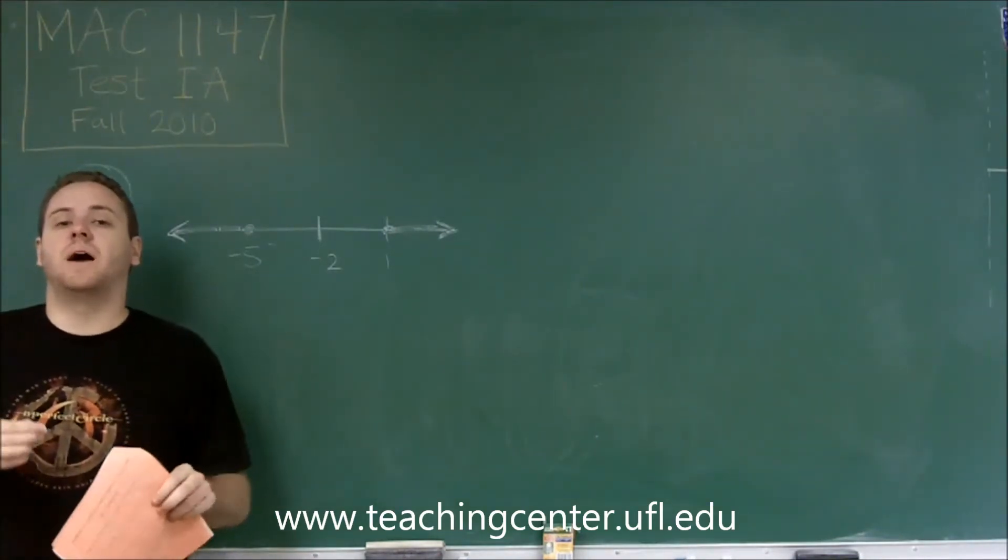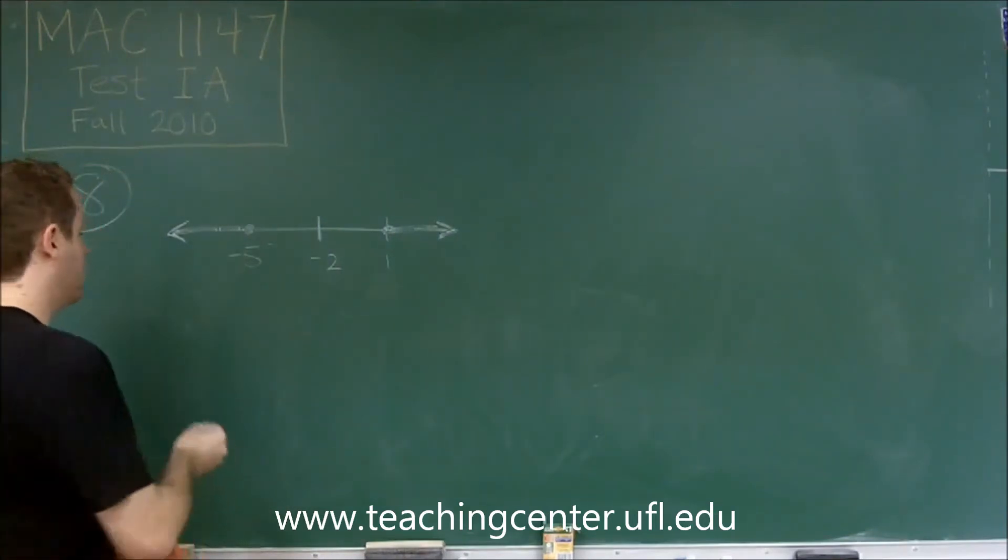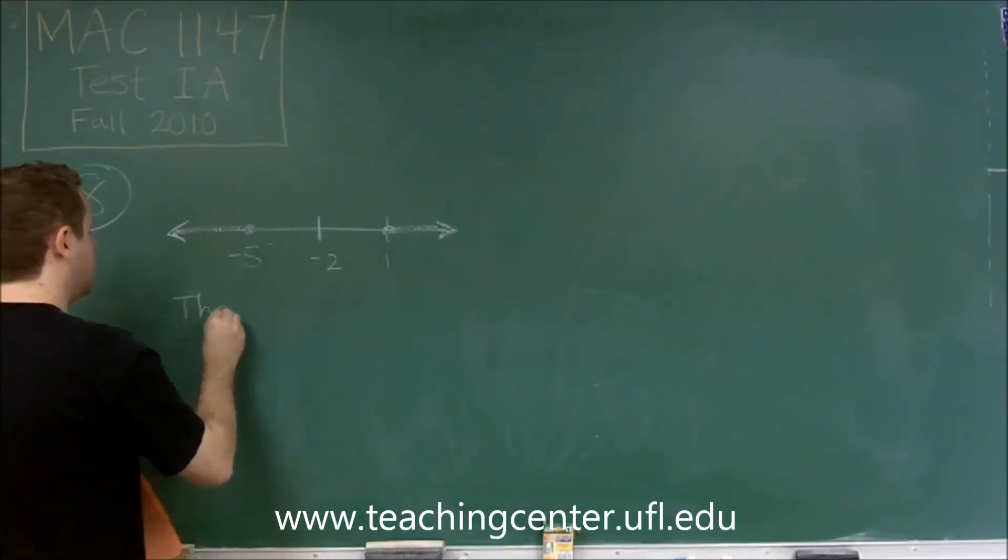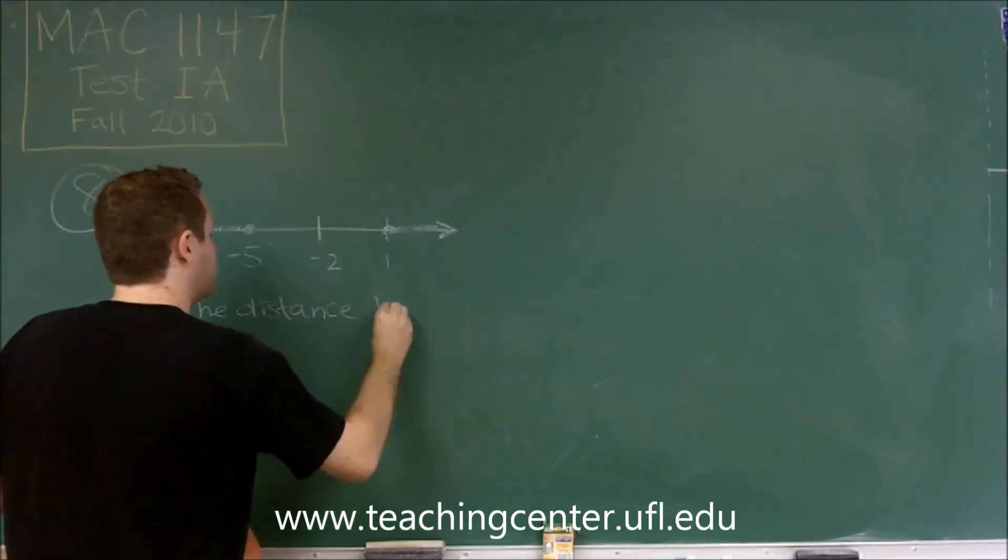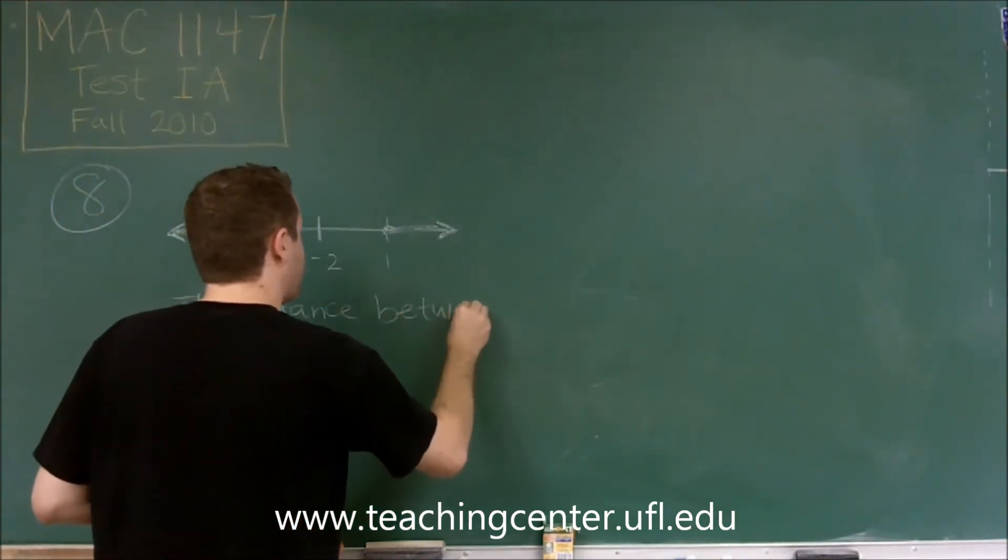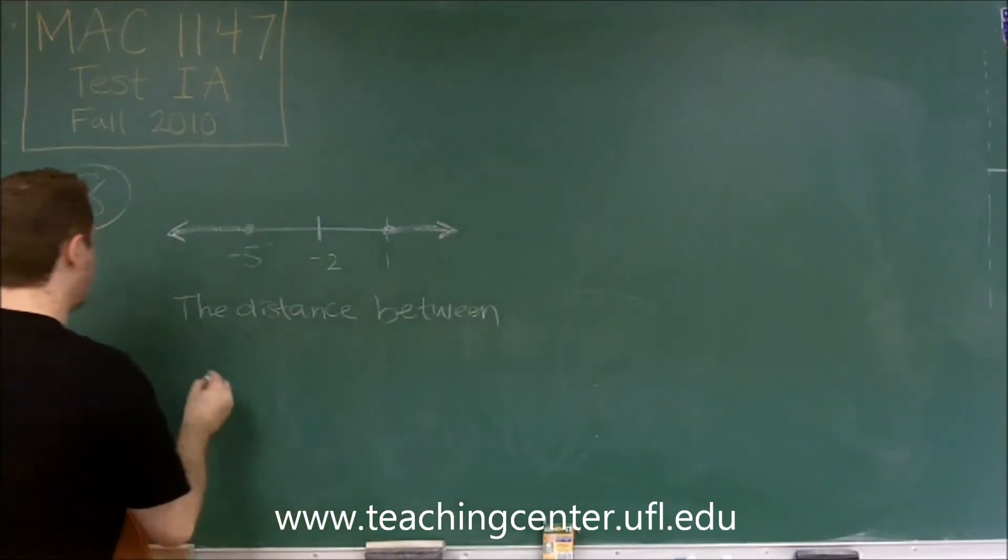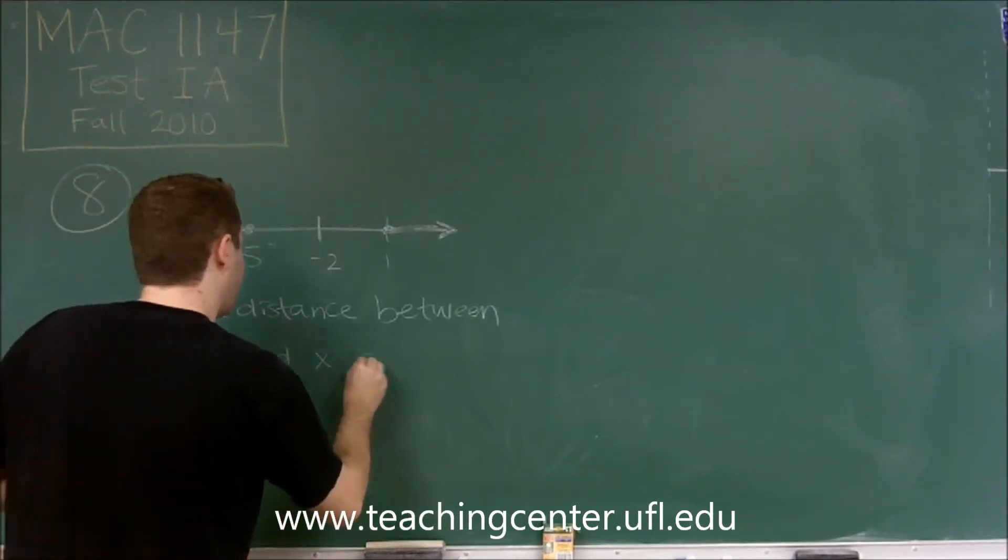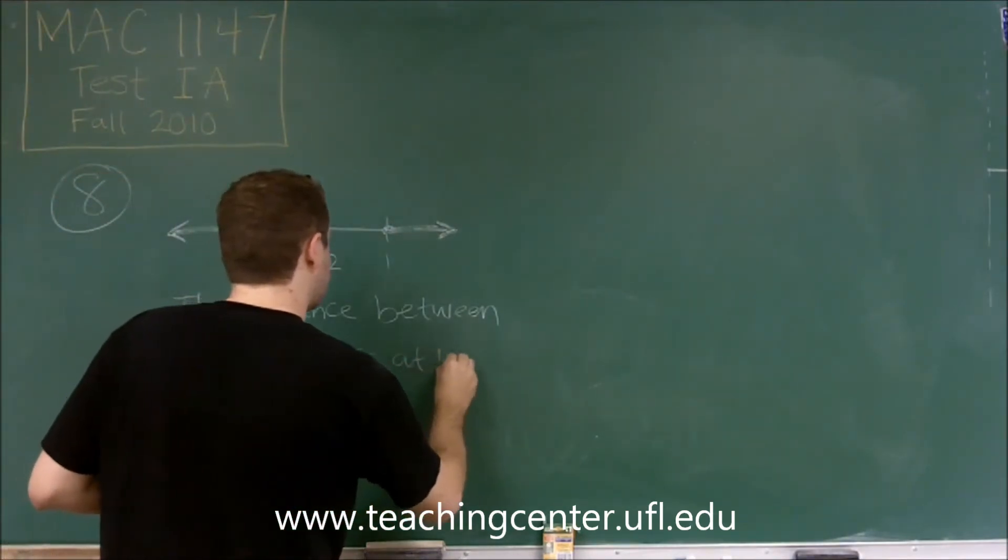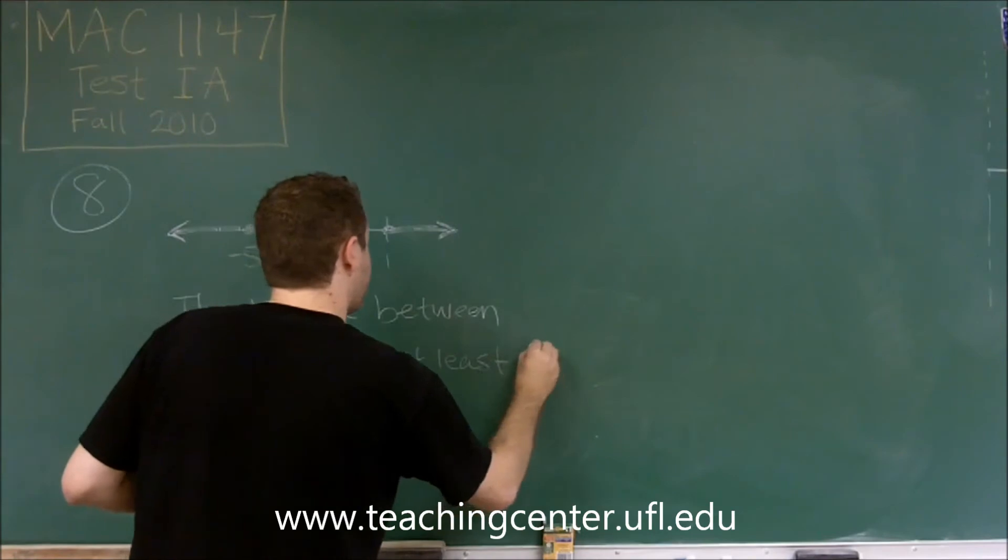Now we just need to figure out how to write that. Keep in mind, writing that in words, you can say the distance between negative 2 and x is at least 3.